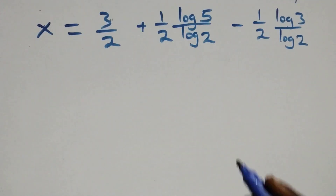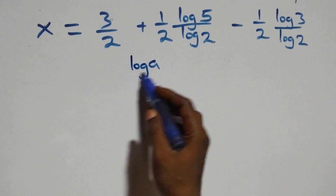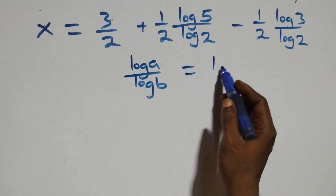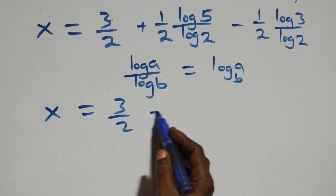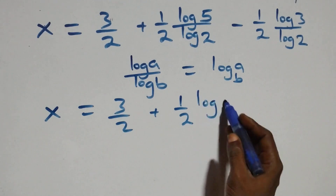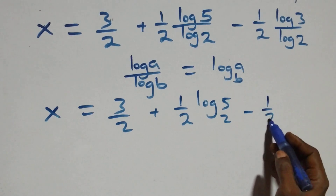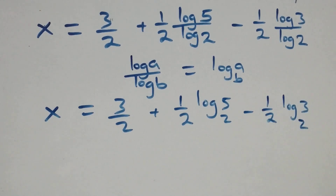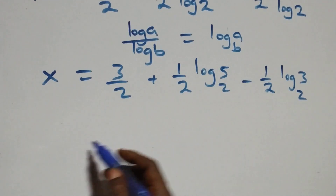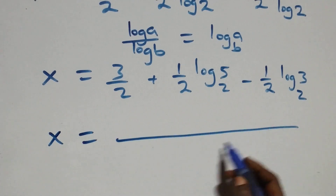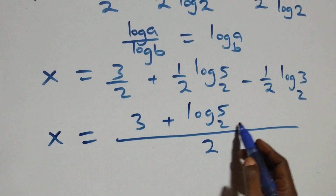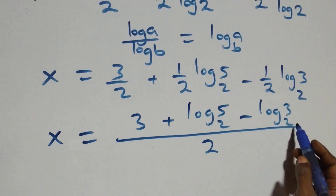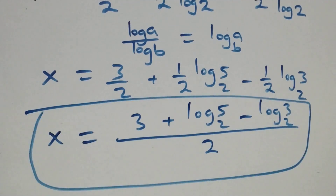Next step, we apply the change of base formula: log a over log b is the same thing as log a to base b. So what we have becomes x equals 3/2 plus (1/2) log₂5, minus (1/2) log₂3. Bringing this together, x equals (3 + log₂5 − log₂3) over 2, and this is the value of x.